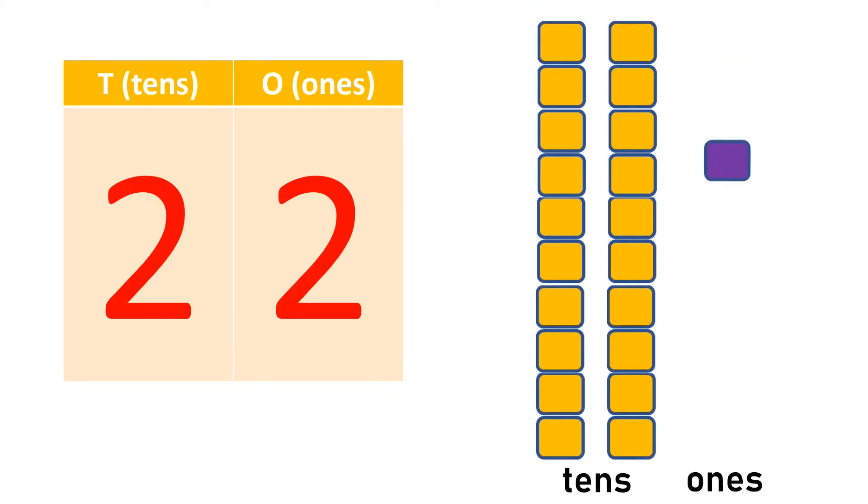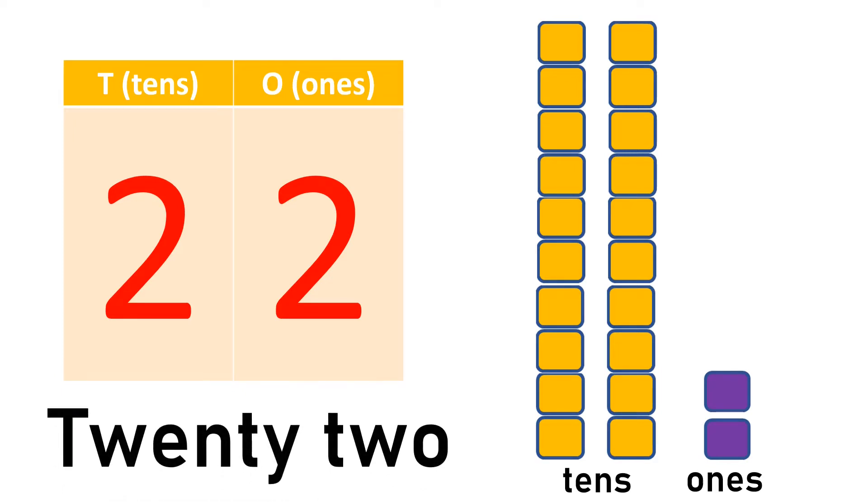2 tens and 2 ones, 1, 2, makes 22, TWENTY-TWO.